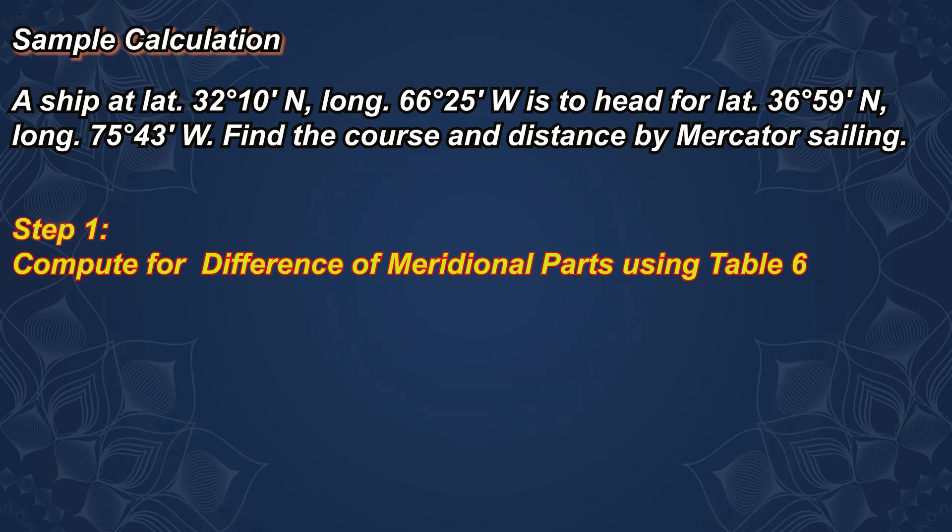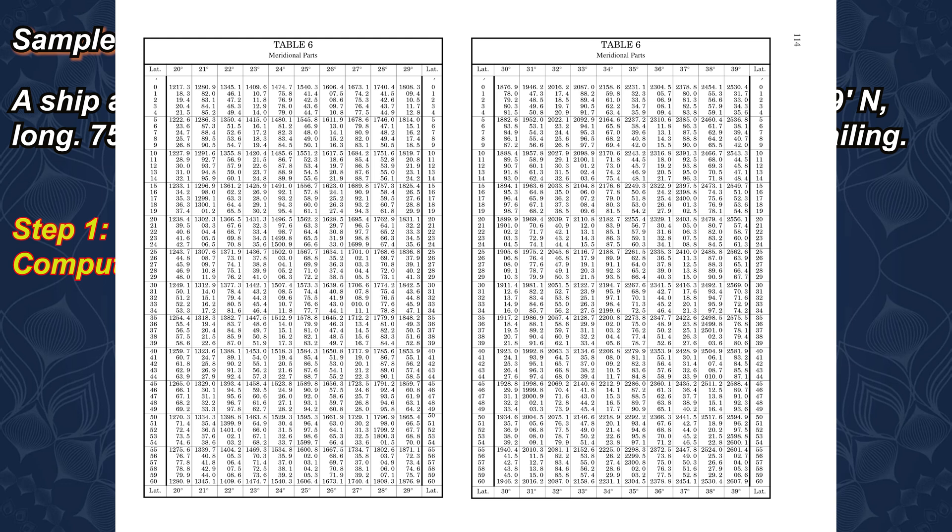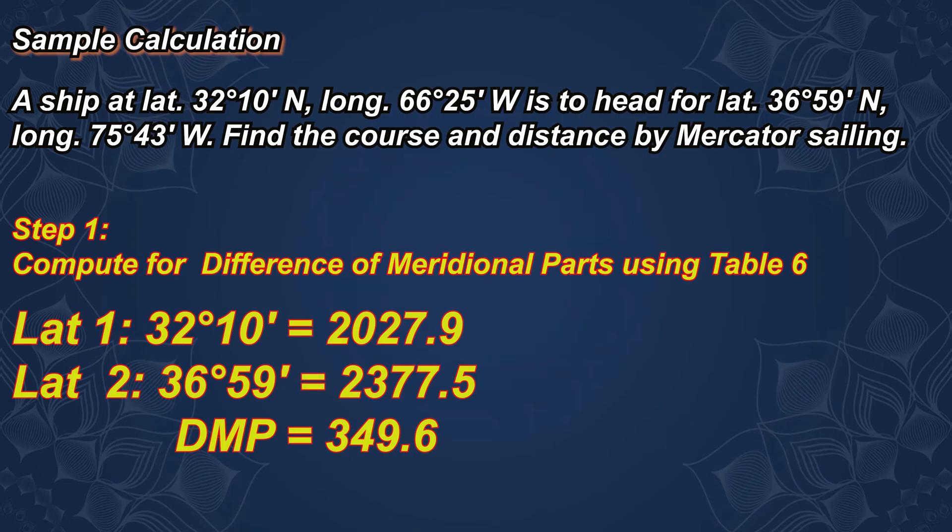Step 1: Compute the difference of meridional parts using Table 6. Latitude 1: 32 degrees 10 minutes equals 2027.9. Latitude 2: 36 degrees 59 minutes equals 2377.5. The difference of meridional parts is 349.6.